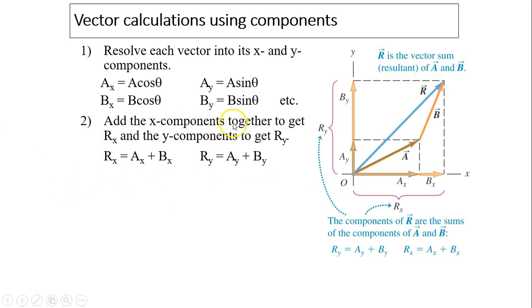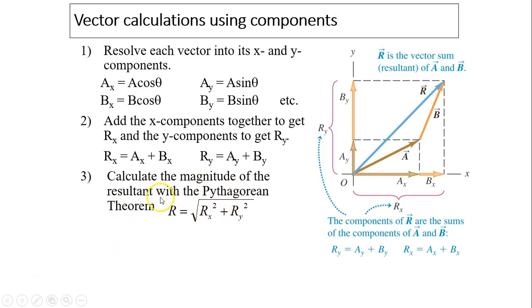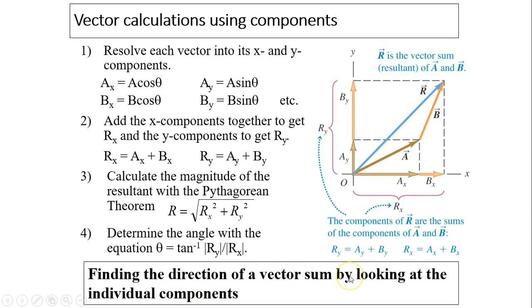Next, you add x components together to get Rx, the x component of the resultant vector. Add all the y components to get Ry. Next, calculate the magnitude of the resultant using Pythagorean theorem: R equals square root of Rx squared plus Ry squared. Lastly, to find the direction, use inverse tan of the absolute value of Ry over Rx. You use absolute value because the direction can be determined by looking at individual component signs.